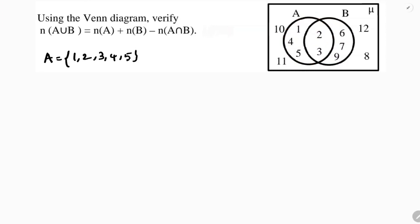Now set B. Looking at the elements of set B, you will get: 2, 3, 6, 7, 9. So B = {2, 3, 6, 7, 9}.